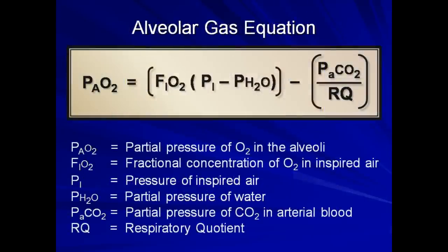Here is the alveolar gas equation. It states that alveolar oxygen tension is equal to the fractional concentration of O2 in inspired air times the difference between the pressure of inspired air and water vapor tension, all minus the PaCO2 divided by the respiratory quotient. The fractional concentration of oxygen in inspired air is 21% or 0.21 for patients breathing room air. The respiratory quotient is the ratio of volumes of carbon dioxide produced to oxygen consumed per unit time. Although the respiratory quotient is dependent upon diet, all but the most extreme diets produce an amazingly consistent respiratory quotient of approximately 0.8.